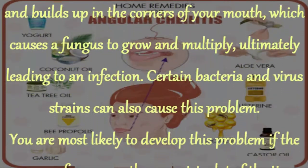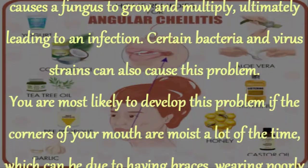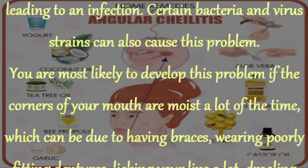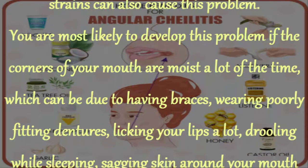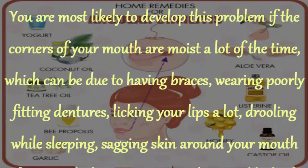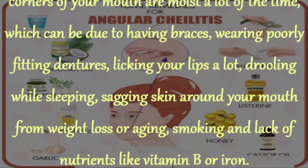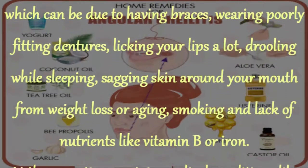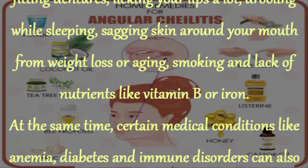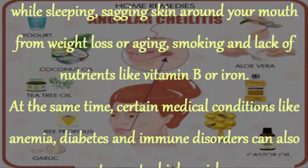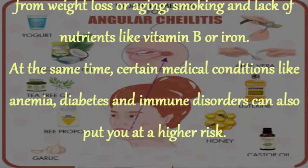Certain bacteria and virus strains can also cause this problem. You are most likely to develop this problem if the corners of your mouth are moist a lot of the time, which can be due to having braces, wearing poorly fitting dentures, licking your lips a lot, drooling while sleeping, sagging skin around your mouth from weight loss or aging, smoking, and lack of nutrients like vitamin B or iron. Certain medical conditions like anemia, diabetes, and immune disorders can also put you at a higher risk.